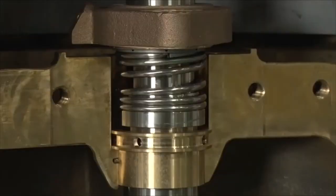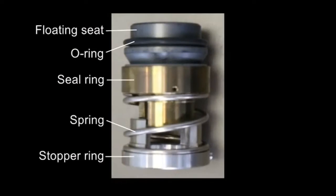Here you can see the mechanical seal parts. They are the floating seat, O-ring, seal ring, spring, and stopper ring.